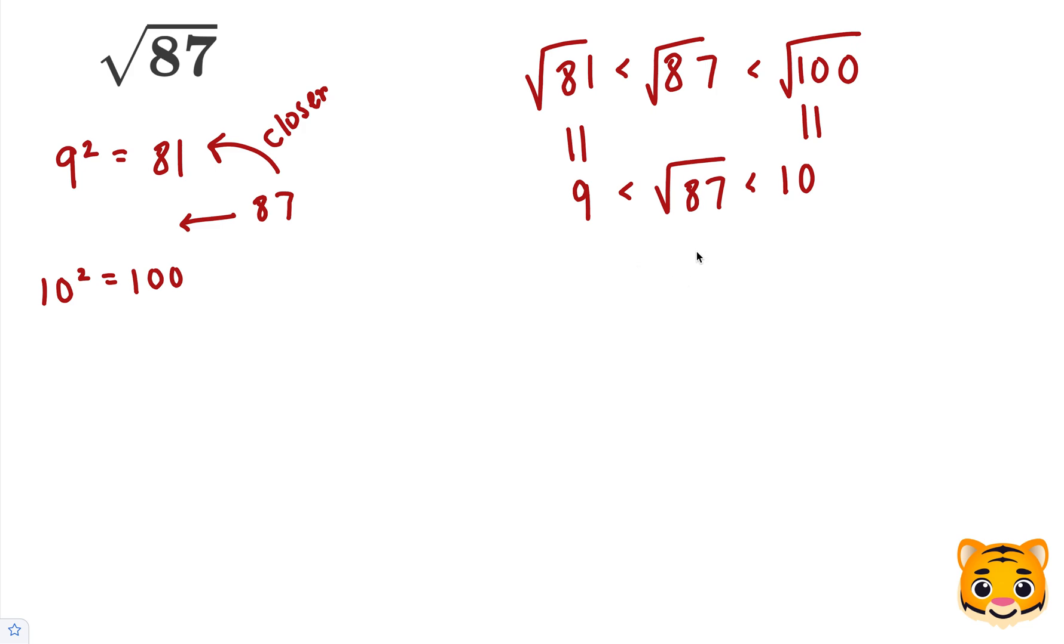So we can try out values such as 9.1, 9.2, or 9.3 and square them to see how close we can get to 87. Here we'll do 9.3. Let's find out what 9.3 squared is.